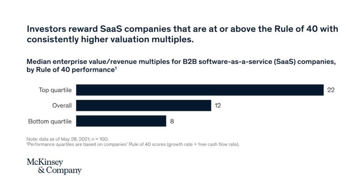When it comes to valuations, companies that are above the Rule of 40 command much higher multiples. McKinsey breaks them into quartiles using enterprise value divided by revenue — similar to our simple market-cap-to-revenue ratio at Nanalyze. The top quartile commands a much higher valuation, while the bottom quartile trades at around 8x — our catalog average is about 6.5x.